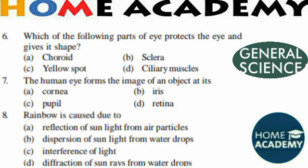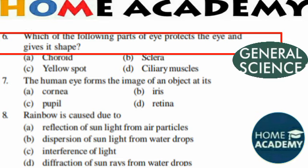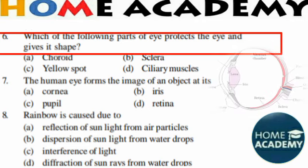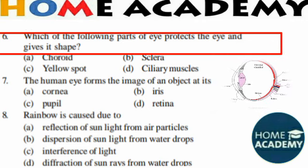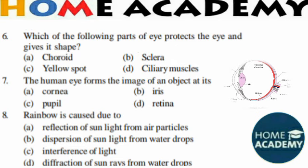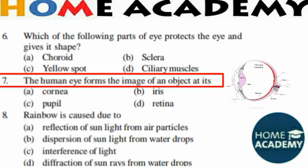Question number 6: Which part of the eye protects the eye and gives it its shape? The correct option is the white part of the eye, which protects the eye and maintains its shape. Question number 7: In which part of the human eye is the image formed? The correct answer is the retina. The human eye forms the image of an object on the retina.